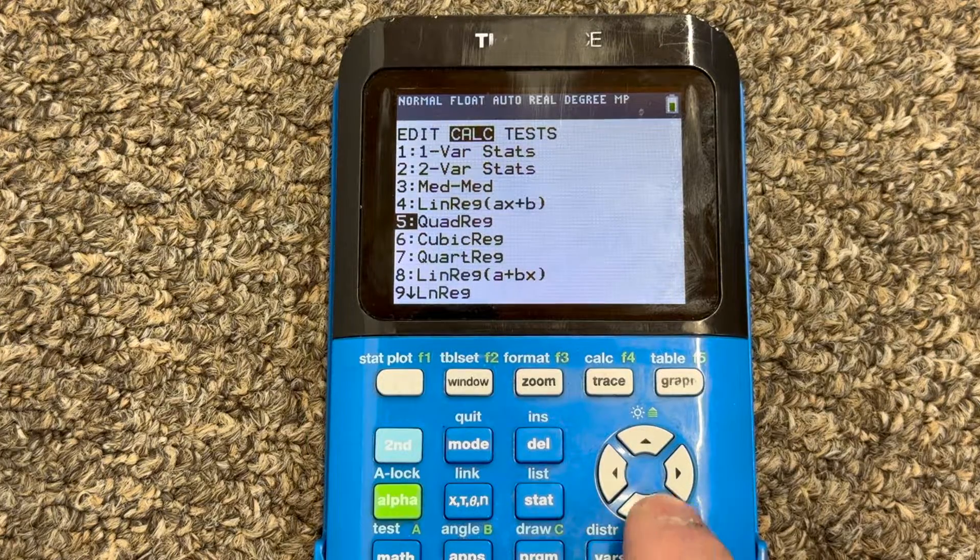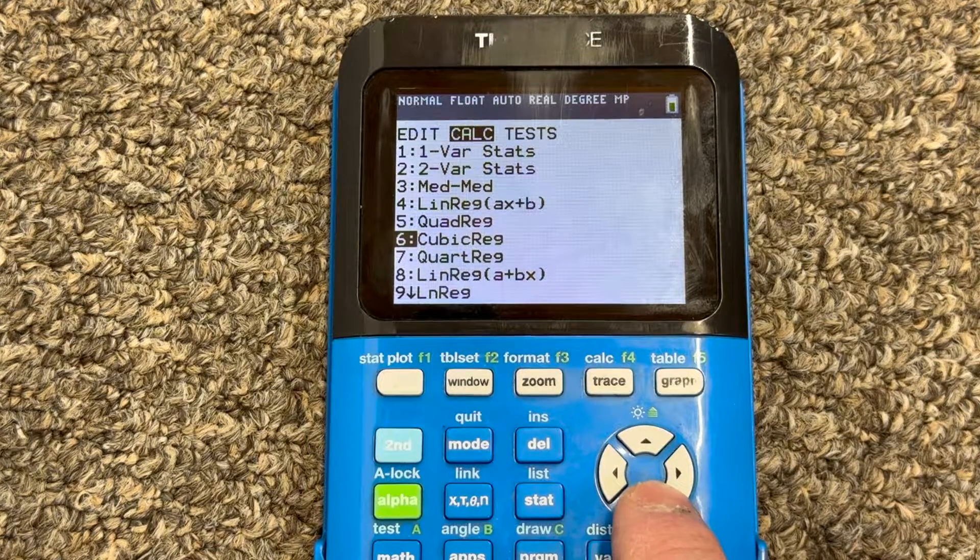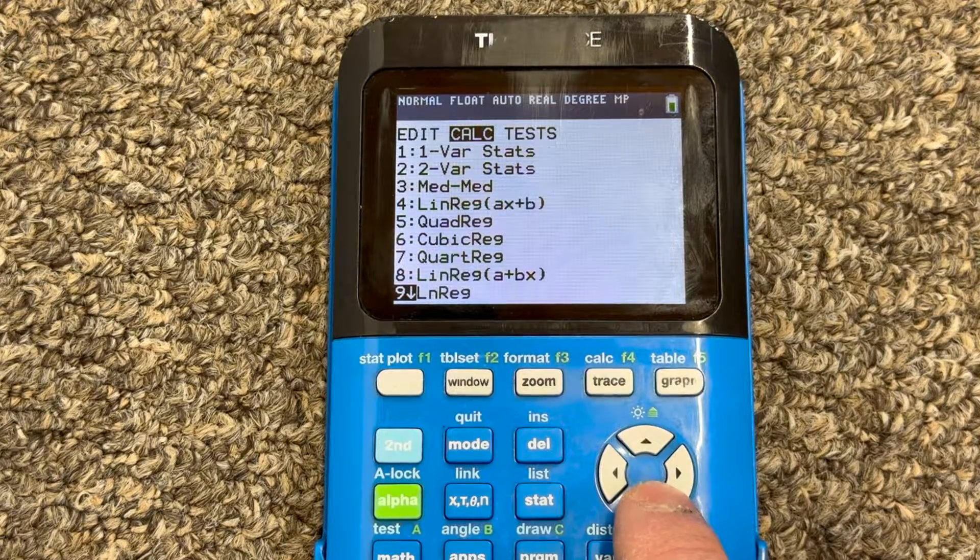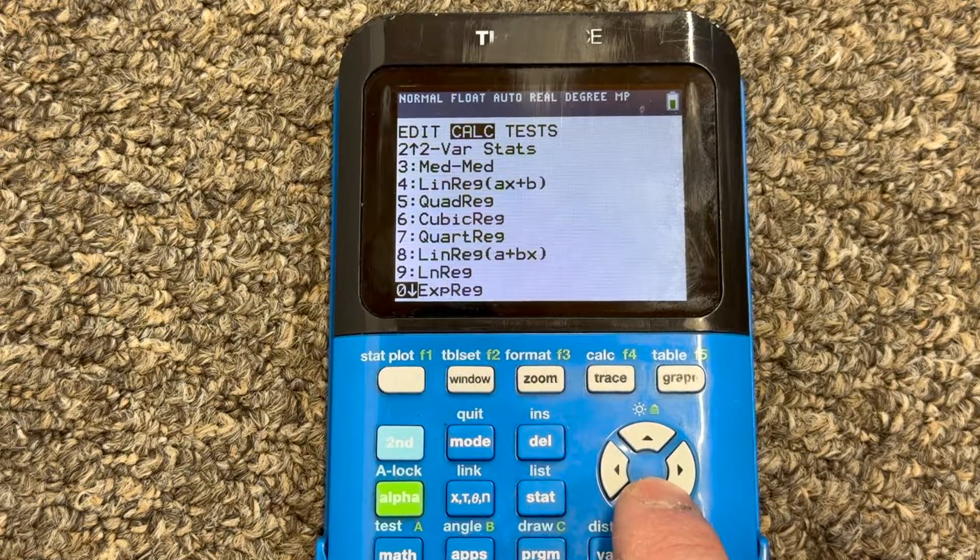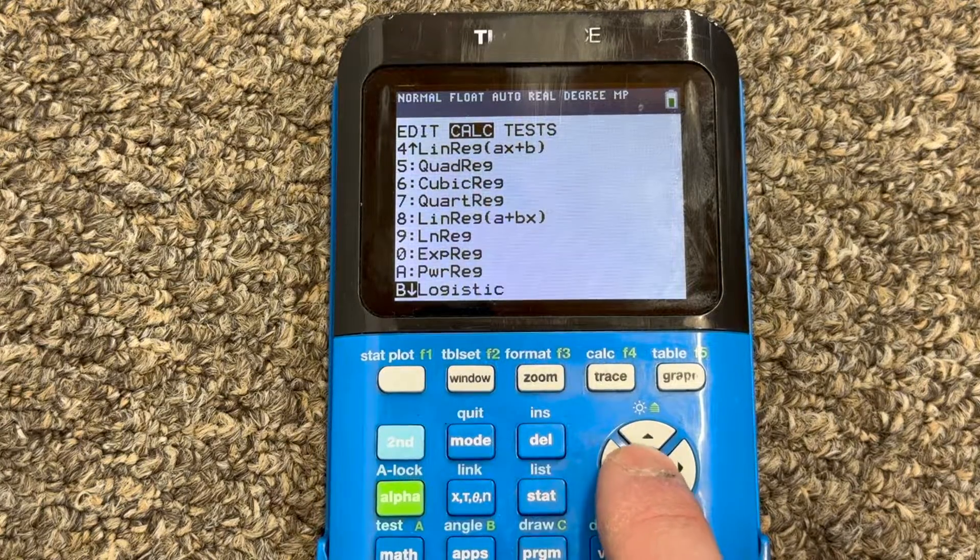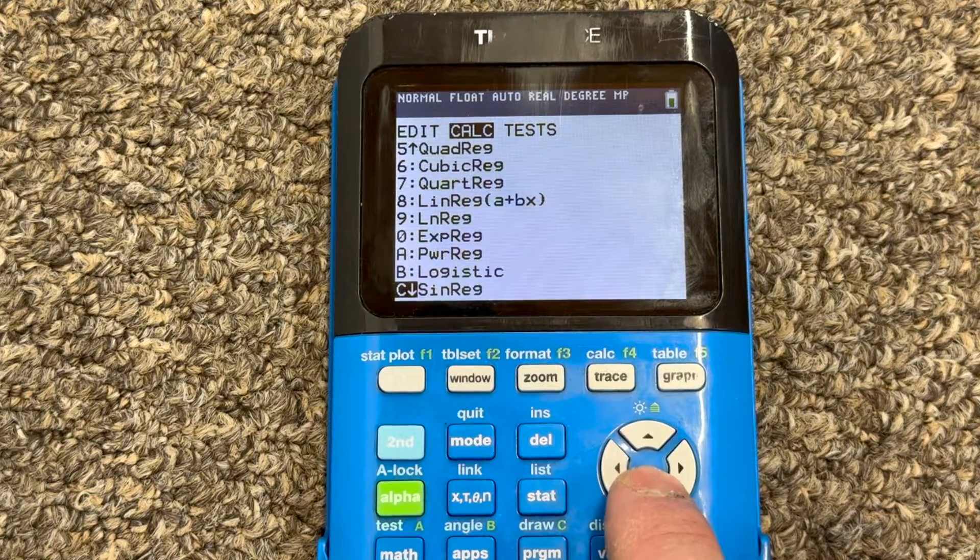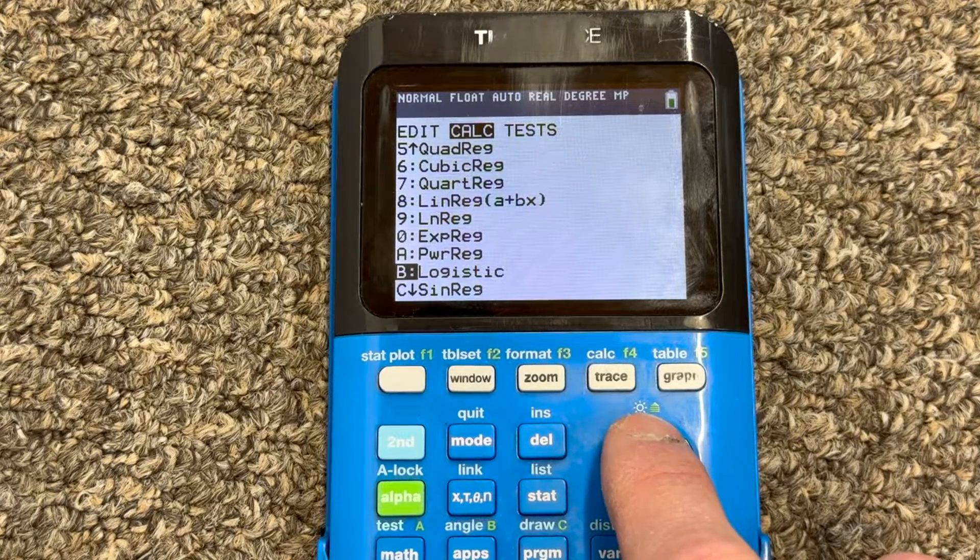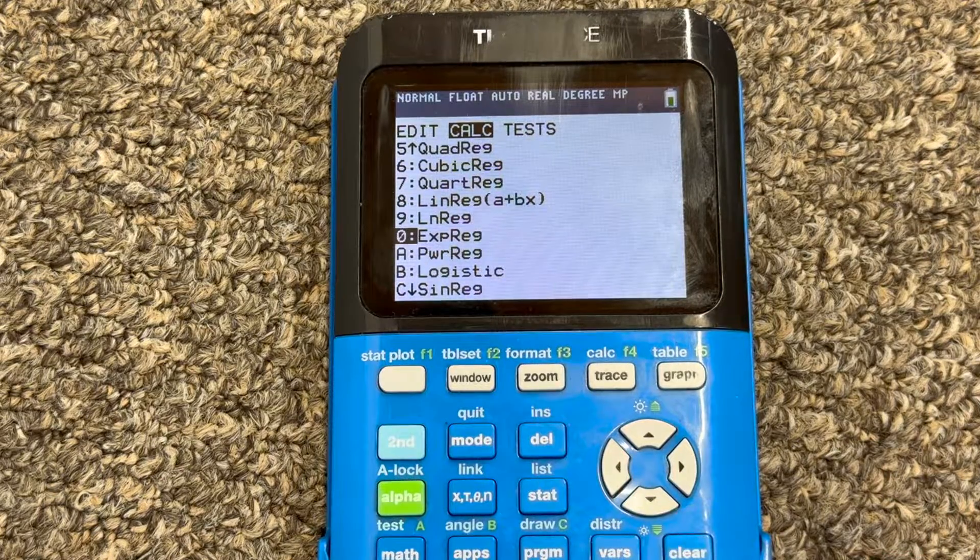You could find like a parabola or quadratic or cubic regression, quartic. You can even do like a natural log, like a logarithmic expression, exponential regression there. You can arrow down and see the different types that are available here, power regression, logistic, sine. But let's just go ahead and do maybe like an exponential regression.